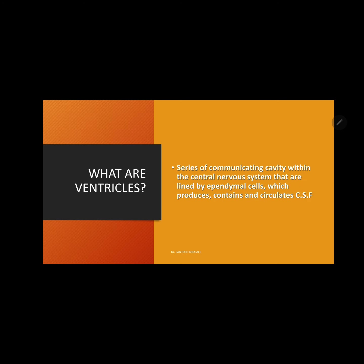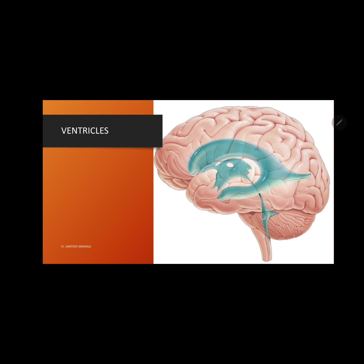These ventricles are a series of communicating cavities within the central nervous system, lined by ependymal cells which produce, contain, and circulate cerebrospinal fluid. Ependymal cells are one of the neuroglial cells lining the ventricles. In the left lateral view of the cerebral hemisphere you can see the pair of lateral ventricles, the third ventricle, and a fourth ventricle, all communicated with each other.